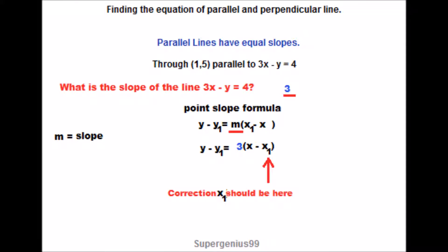And then what is y₁? Well, they give it in the problem. y is the second component of the ordered pair. So it's 5. And then what is x₁? x₁ is the first number in the ordered pair. And that is a 1. So let's write our equation. So y minus, so y₁ is a 5, is equal to 3 times x minus x₁ is a 1.